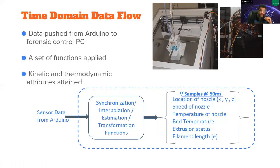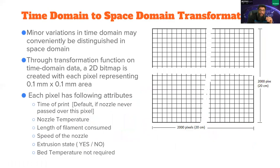So after time domain, we transform the data into space domain as well. So in Ultimaker 3, the printer bed is 200 millimeter by 200 millimeter. So each pixel actually represents a square of 0.1 millimeter by 0.1 millimeter.